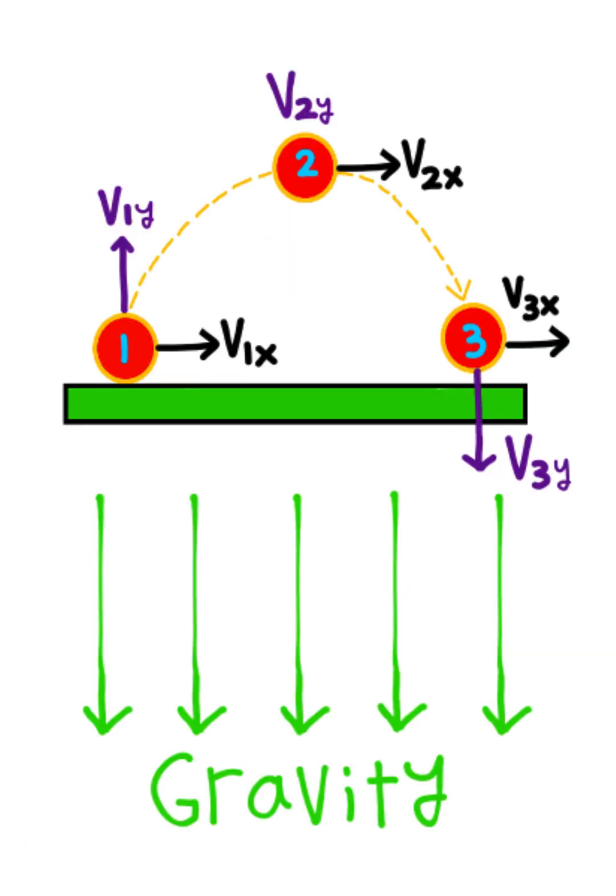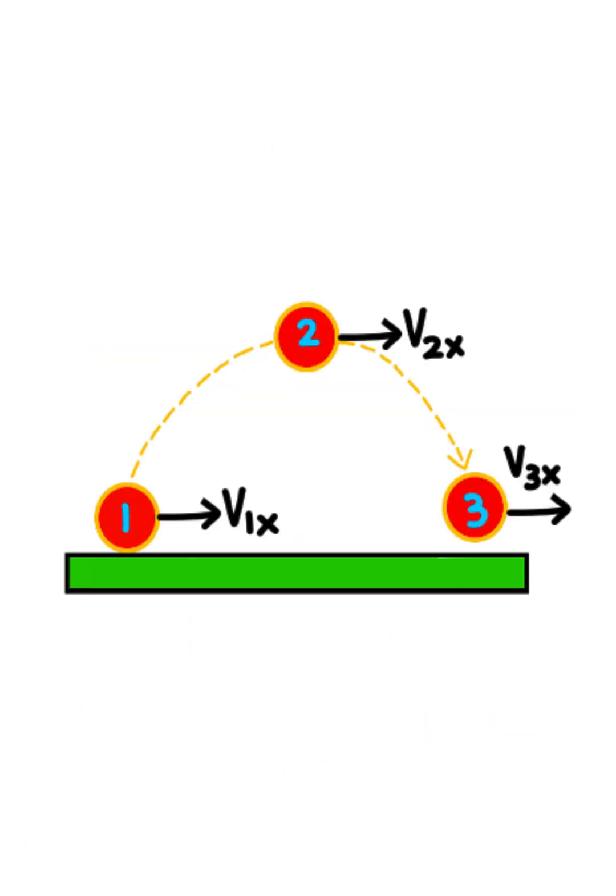This is due to the fact that gravitational acceleration is influencing the ball at each point in time. But what would happen if we only focused on the horizontal components of velocity? Well, if we assume that wind resistance is negligible, then the horizontal velocity is going to be the same at every point of the ball's motion.